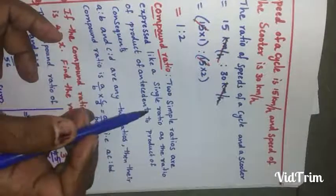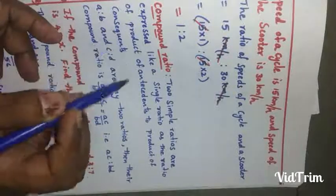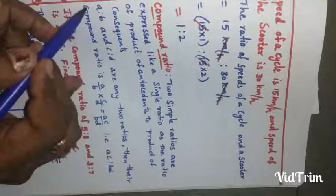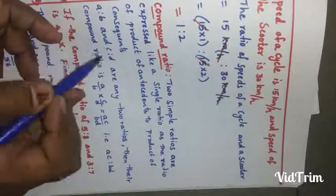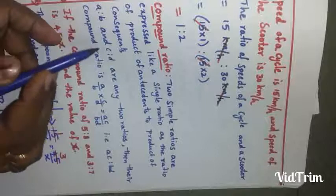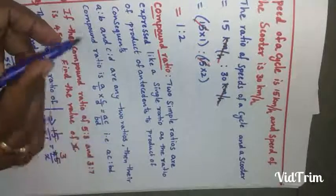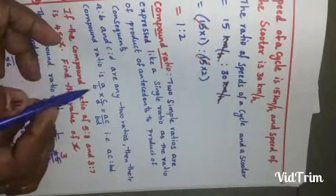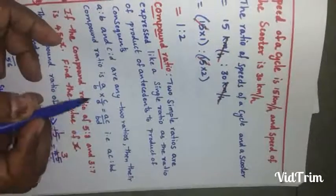Now let us see the definition of compound ratio. Two simple ratios are expressed as a single ratio — if two ratios are given, we convert them into one single ratio as the product of antecedents to the product of consequents. If a is to b and c is to d are two ratios, then their compound ratio is a into c by b into d, which we write as ac is to bd. This is the compound ratio — multiplying two fractional numbers or two ratios.